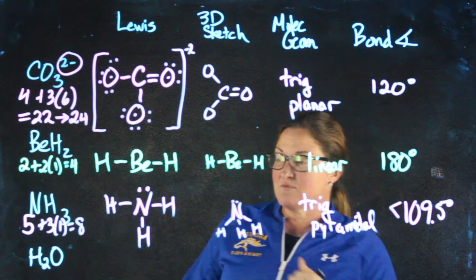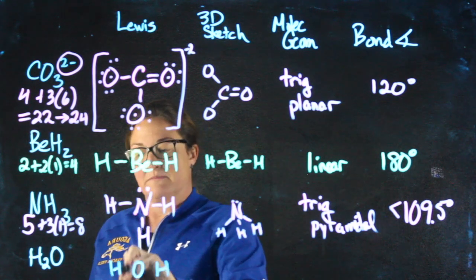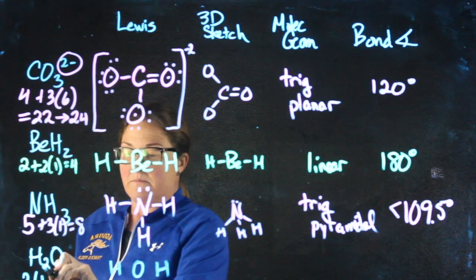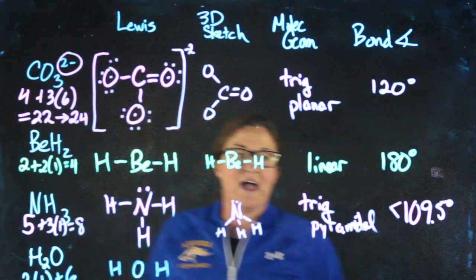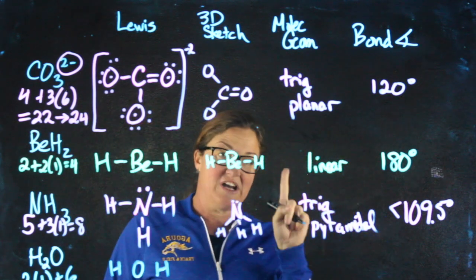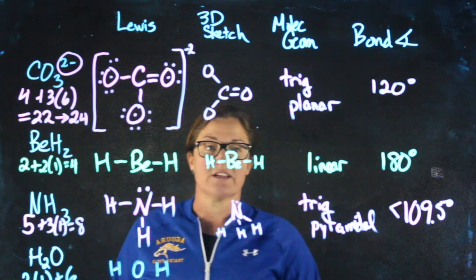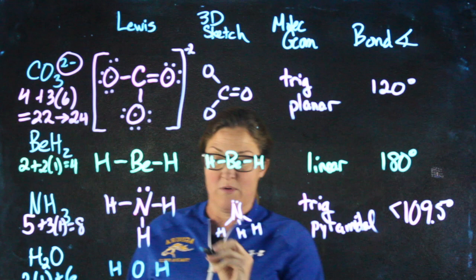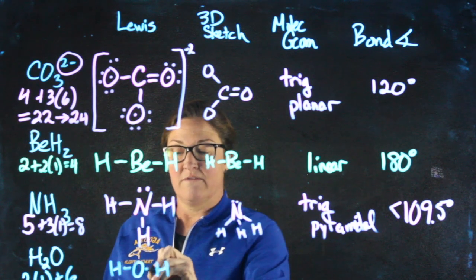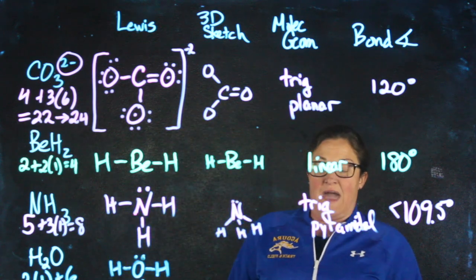The last one is water. Oxygen in the middle, hydrogen around. Each hydrogen has one valence electron, so a total of two. Oxygen has six valence electrons, gives me a total of eight to work with. Counting: two, four, six, eight.